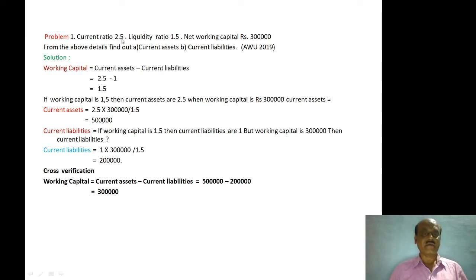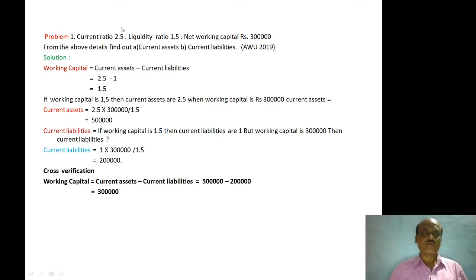Current Assets to Current Liabilities ratio is 2.5 is to 1. So when Current Ratio is 2.5 to 1, Current Assets is 2.5 and Current Liabilities is 1. Therefore, Current Assets minus Current Liabilities equals 2.5 minus 1, which equals Working Capital of 1.5.